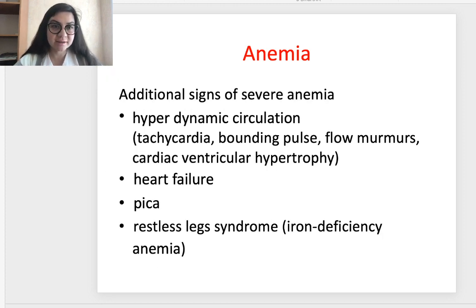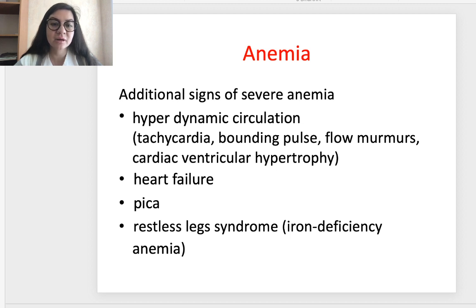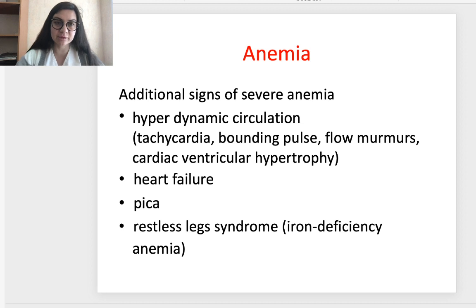Additional signs possible in severe anemia include hyperdynamic circulation with tachycardia, bounding pulse, flow murmurs, and cardiac ventricular hypertrophy. It can progress to heart failure. There may also be pica and restless legs syndrome, which are special signs of iron deficiency anemia.